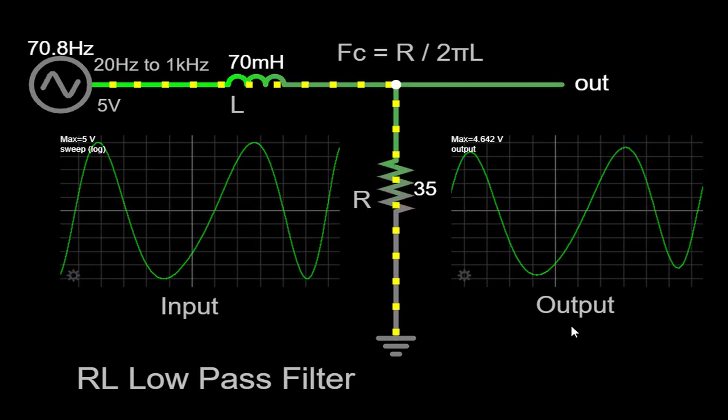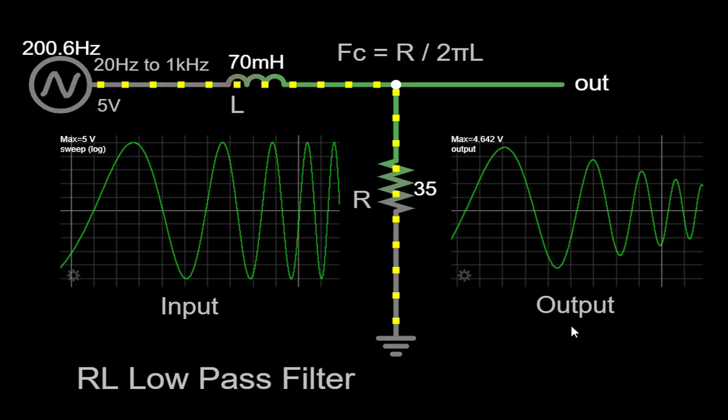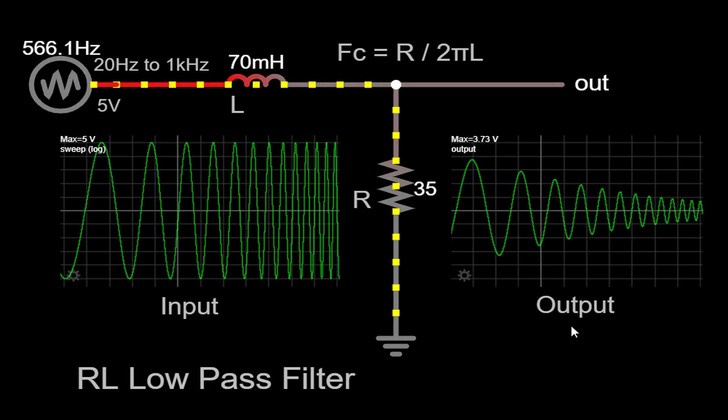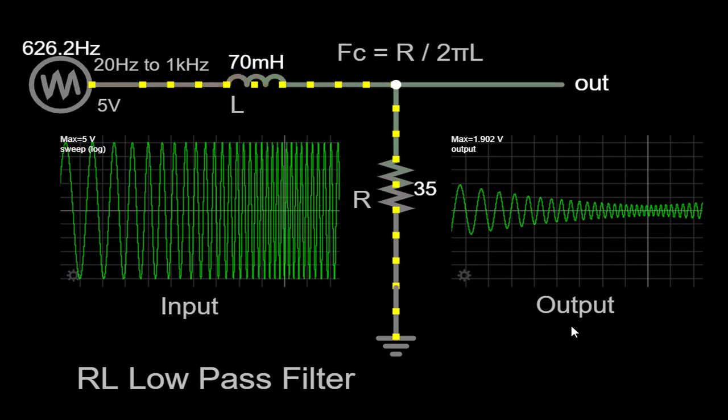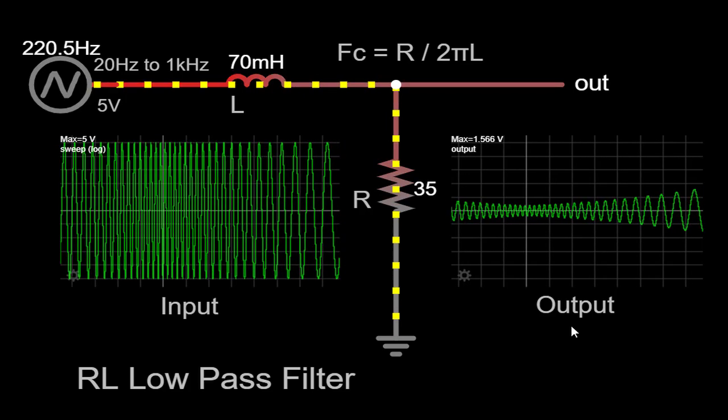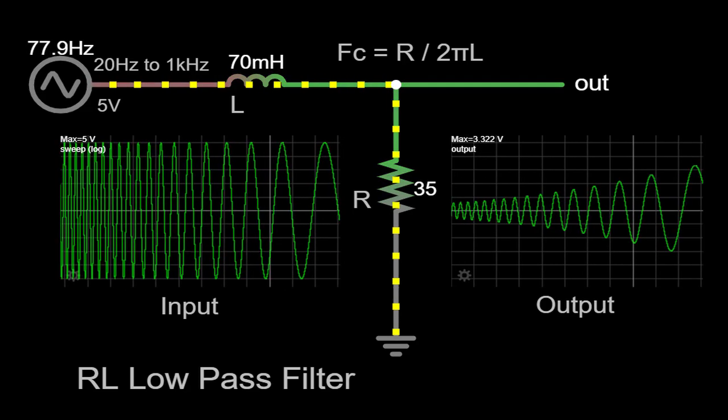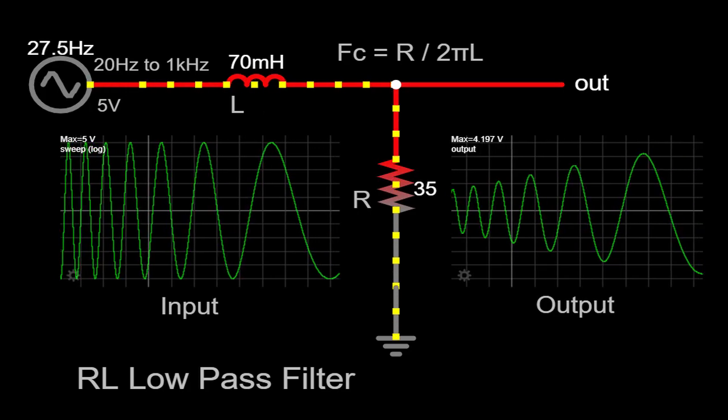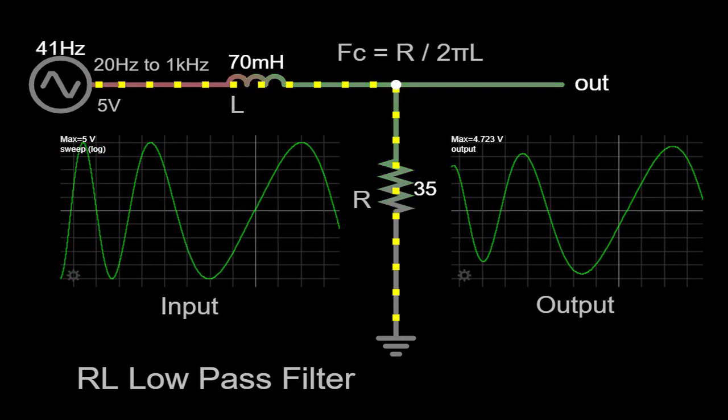We can identify its ability to pass low-frequency signals with minimal distortion while attenuating higher frequencies. The cutoff frequency serves as a boundary where the transition from minimal attenuation to significant attenuation occurs. The RL low-pass filter has practical applications in various fields. In audio systems, it can be used to remove high-frequency noise or interference, resulting in a cleaner and more accurate audio output. In communication systems, it helps separate different frequency bands, enabling efficient transmission and reception. The RL low-pass filter's frequency-selective properties make it a valuable tool in signal processing, circuit design, and many other applications.